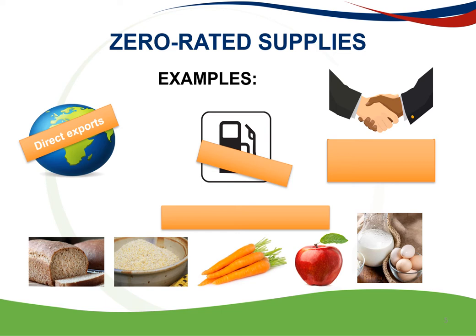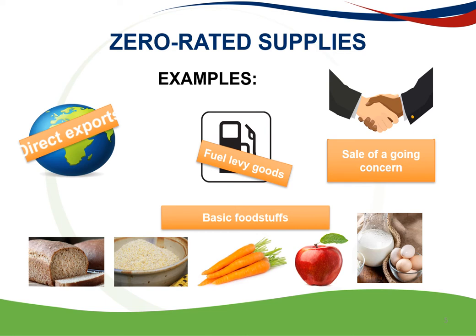There are many examples of zero-rated supplies. First, direct exports. We have fuel levy goods such as petrol and diesel. The sale of a going concern — in other words, if you sell your entire business to someone else. And also a few basic foodstuffs, for example: brown bread, whole wheat brown bread, maize meal, samp, rice, pilchards, milk, fresh fruit and vegetables, vegetable oil, eggs and lentils.